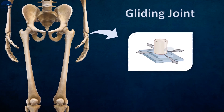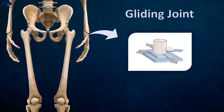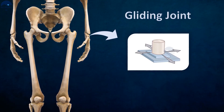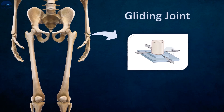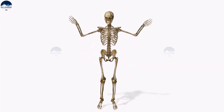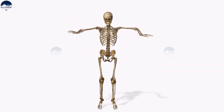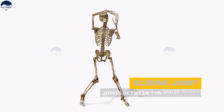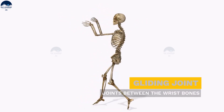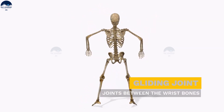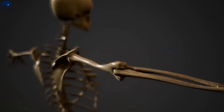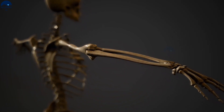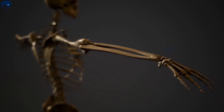Plain joint, also called a gliding joint: These joints are formed between two bones which are flat or nearly flat, enabling the bones to slide over each other. This type of joint provides only a small amount of gliding movement.